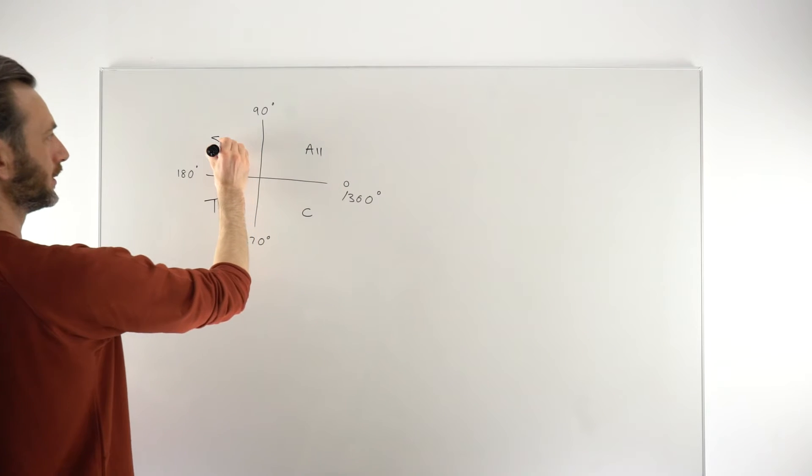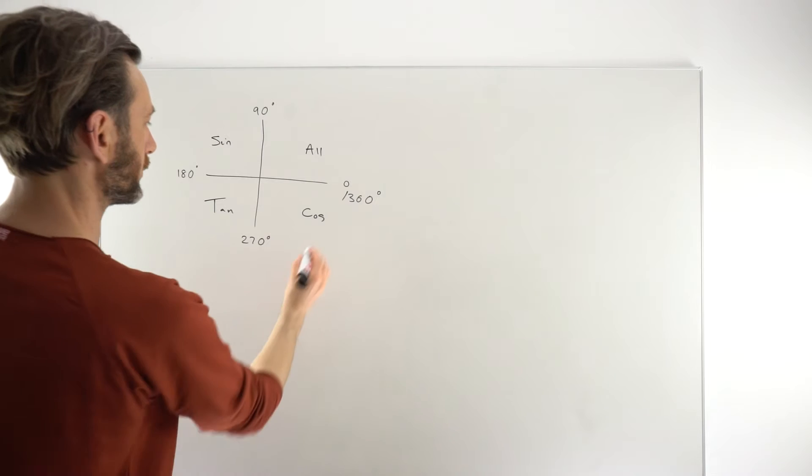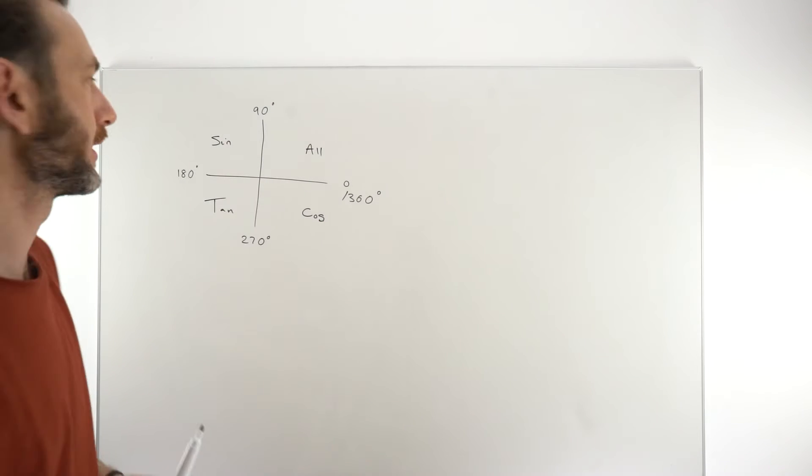So the All quadrant, the Sine quadrant, the Tangent quadrant, and finally the Cosine quadrant. Okay, so that's how we generally start by learning the CAST diagram.